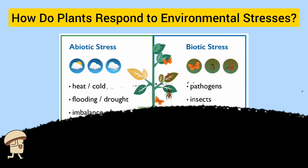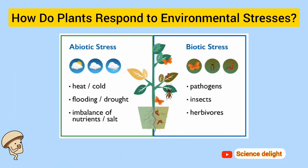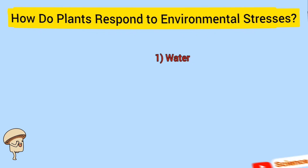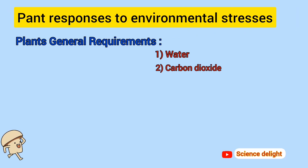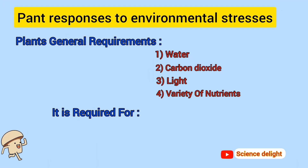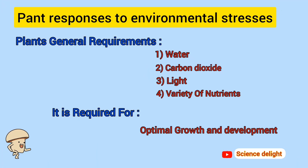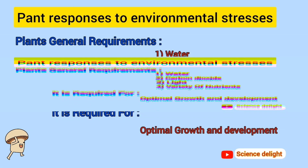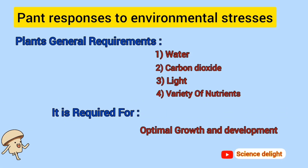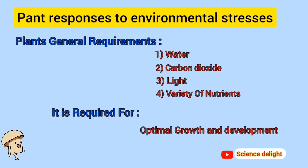How do plants respond to environmental stresses? Plants respond to environmental stress in many ways. Plants' general requirements are water, carbon dioxide, light, and a variety of nutrients. These are required for optimal growth and development of plants.